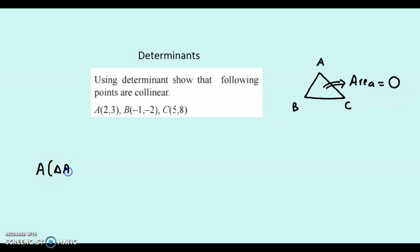Area of triangle ABC. We apply the formula to calculate area of a triangle using determinants. So, it is half into determinant of. We write the coordinates of A: 2, 3. Then coordinates of B: -1, -2. Coordinates of C: 5, 8. And the last column would be 1, 1, 1. So, we applied the formula to calculate area using determinants.